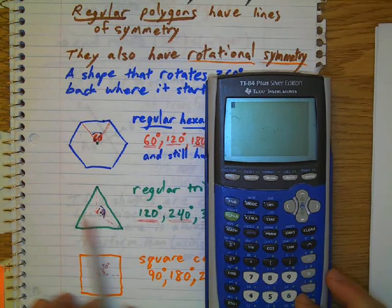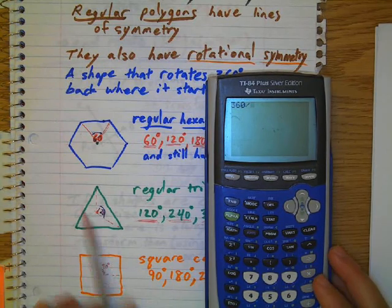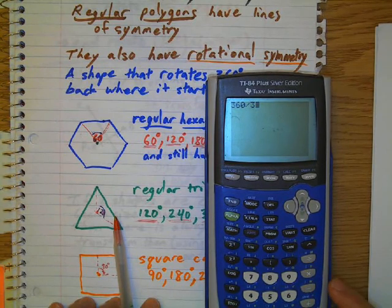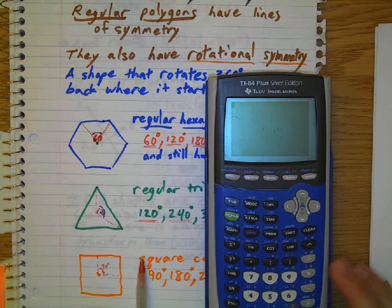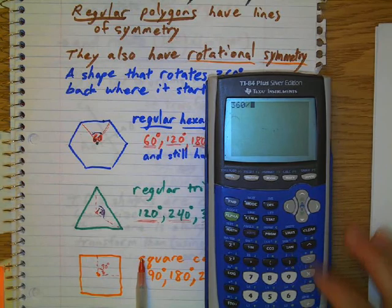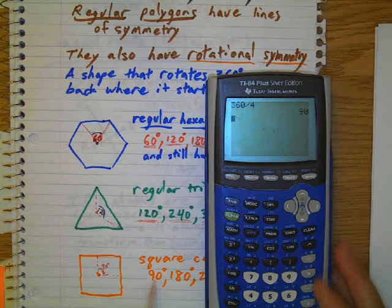What about this? If I do 360 divided by, how many sides do I have? 3. Da-da-da-da! 120. How about 360 divided by 4? We get 90.